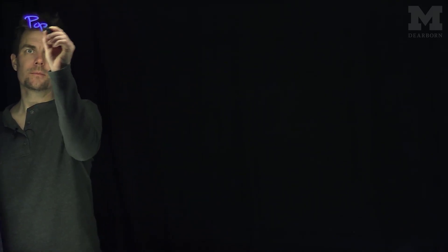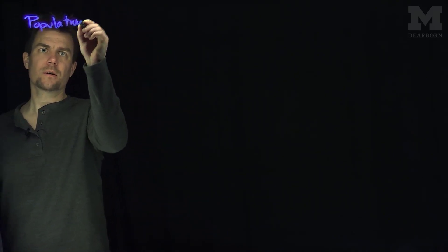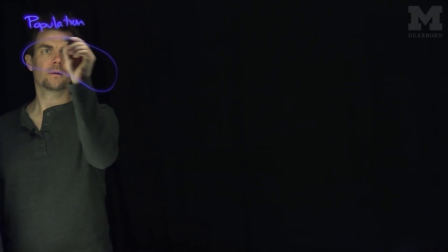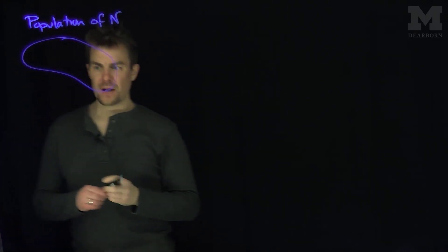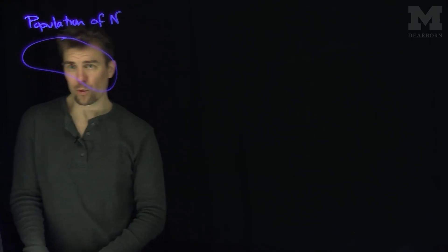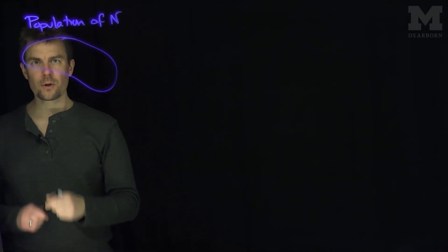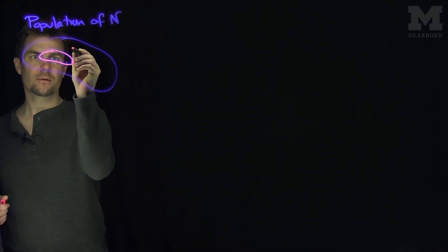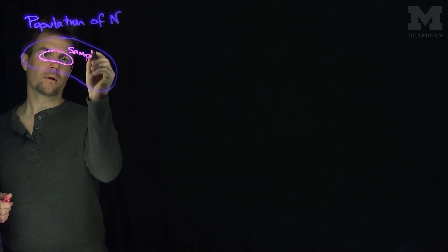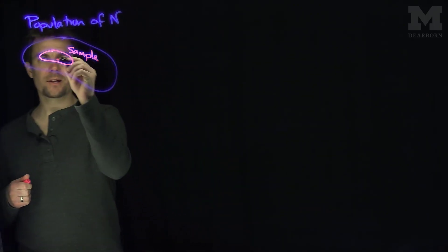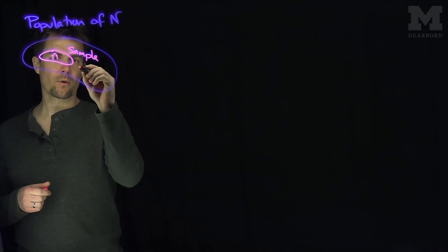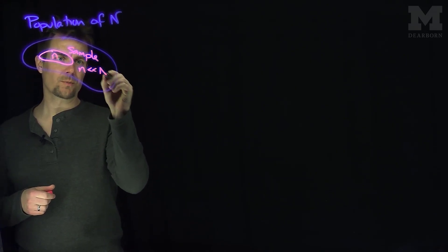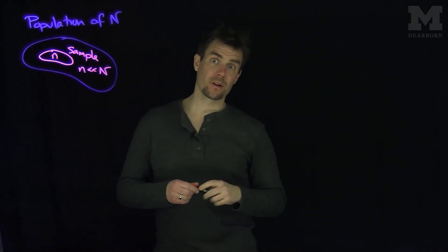Hello, students. In this video, we'll discuss an estimator for the population variance. Recall our setup: we have a large population of N. This might be like the whole world, every single college student, or every American. We have a sample of that population of size little n, and of course little n is much, much smaller than big N.